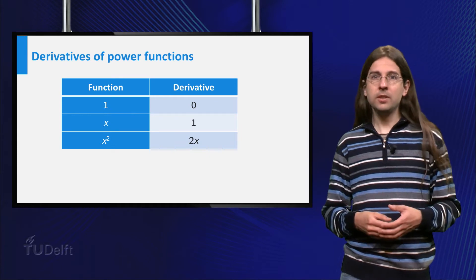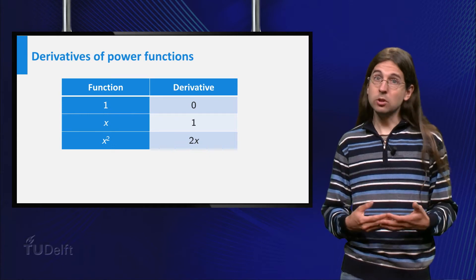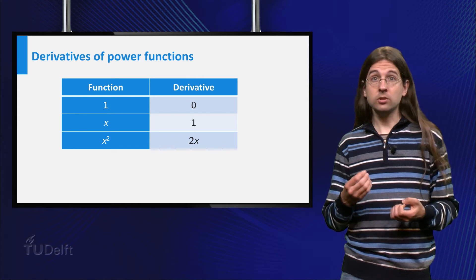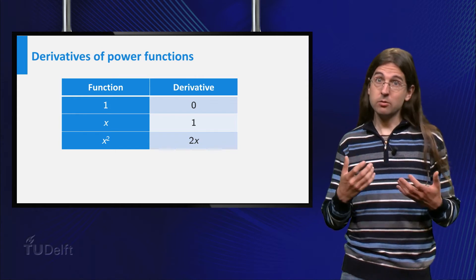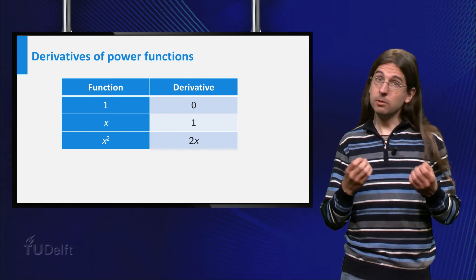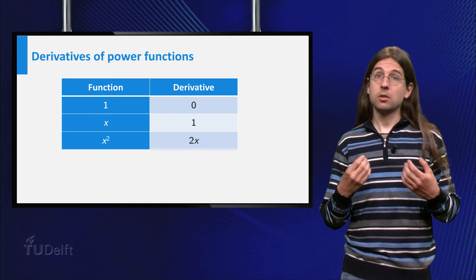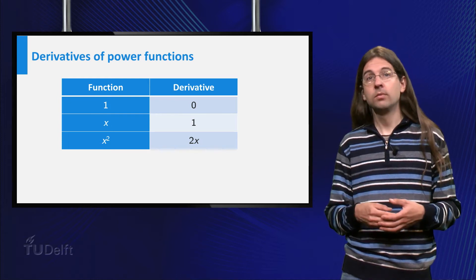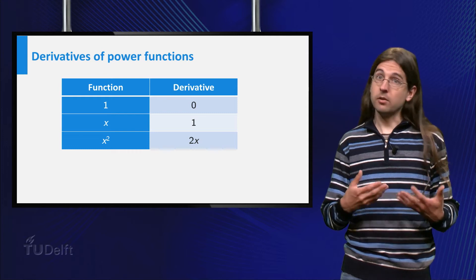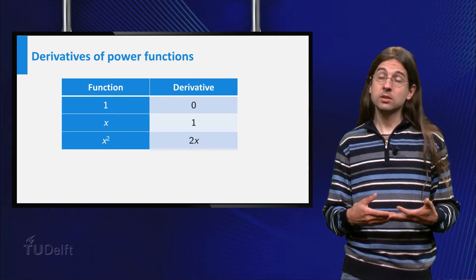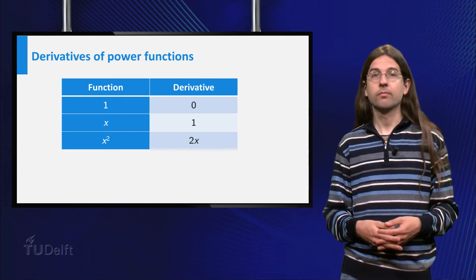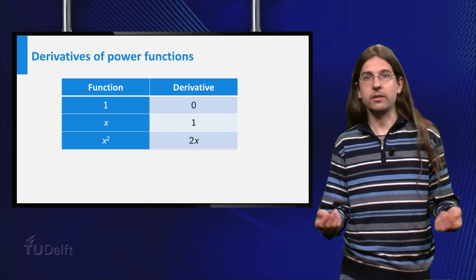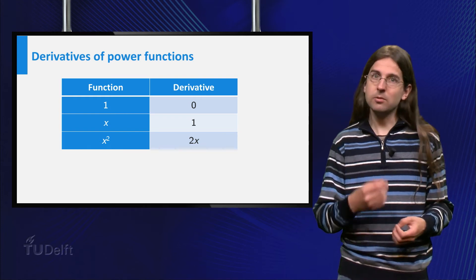Let us put the derivatives we found so far in a table. The derivative of the constant function 1 is x to the power 0, which equals 0. The derivative of the function x to the power 1 equals 1. And the derivative of the function x squared equals 2x. Perhaps you are starting to see a pattern, but let us do another one.